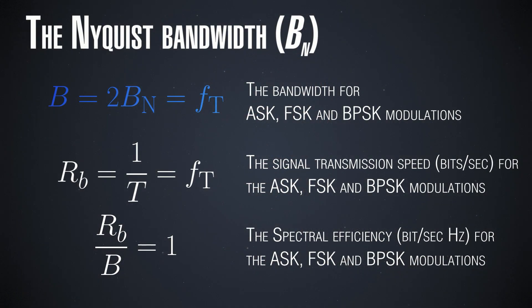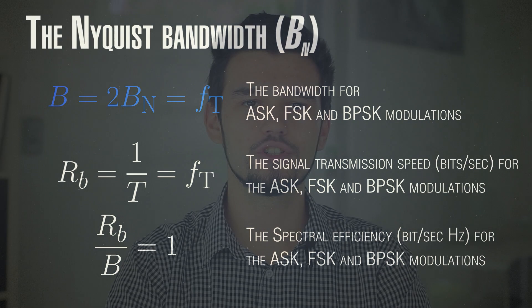So how can we increase efficiency? With all of these methods, the efficiency is independent of which parameter we modify — it is always the same. The answer is that we can modify more things at the same time. So far, we considered modulations which change only one of the three characteristics of a sine wave — either only the amplitude, only the frequency, or only the phase. But we can do two or all three at the same time, or we can change just one of them by including more states. So far, we had only two states for ASK, FSK, and DPSK.